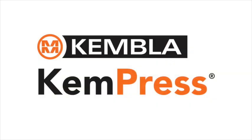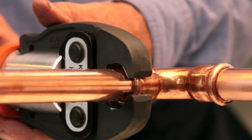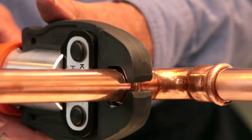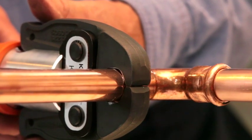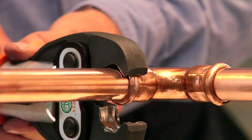Kempress is much faster and easier to use than conventional brazing. There's no flame involved, you don't need a hot works permit, and if you're doing some maintenance, you don't need to drain water out of the system.